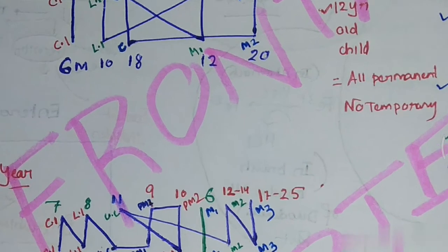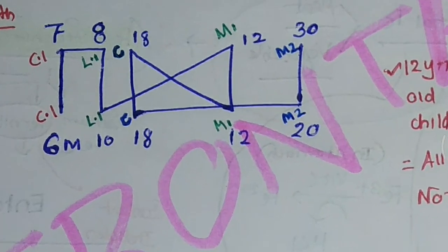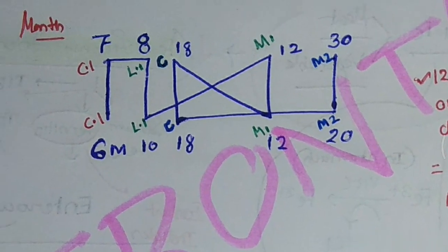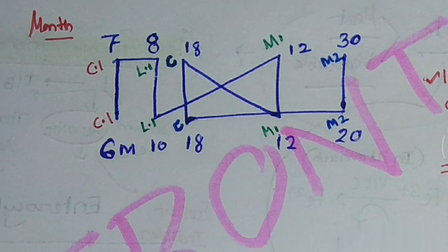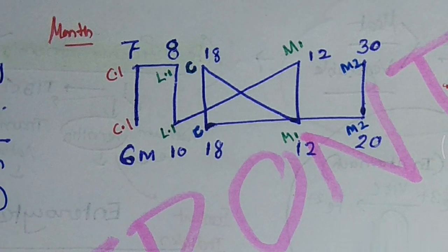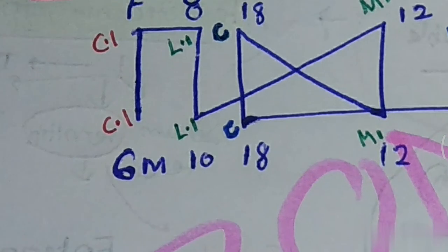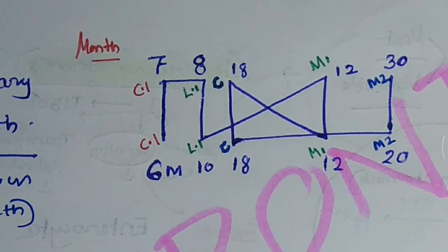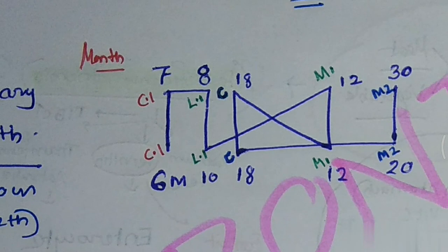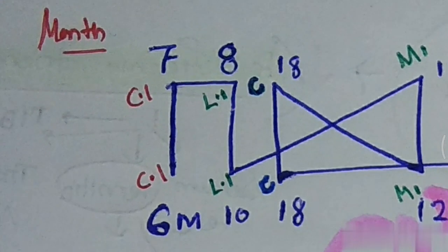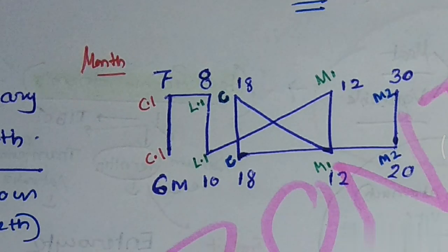For the deciduous teeth eruption sequence, it is remembered by the word NXI. The first teeth to erupt is the lower central incisor at six months of age. The second group is the upper central incisor at the seventh month of age.